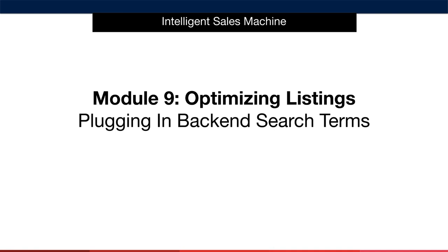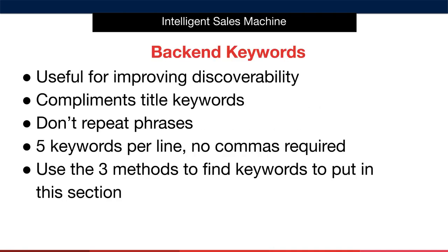These back-end keywords give us the opportunity to plug in extra keywords in the product listing in Seller Central that can bring us even more traffic without compromising the quality of our product's listing. These keywords are great for improving the discoverability of our product.